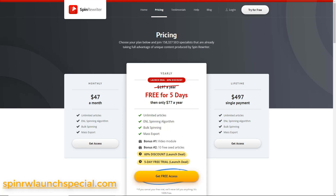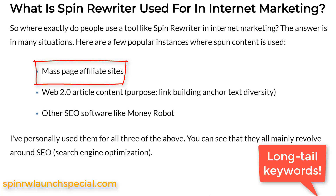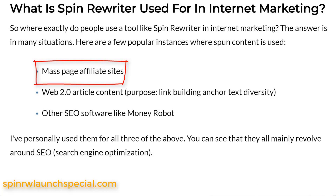Let's get started with what Spin Rewriter is most commonly used for in internet marketing. I've got three bullet points of the most commonly used uses of Spin Rewriter. First up is mass page affiliate sites. What affiliate marketers do with Spin Rewriter is they create these mass page sites — a lot of articles just spun — and they put their affiliate link in there targeting different keywords for products or services they're promoting. This is a shotgun approach to getting a lot of affiliate marketing income and clicks to your affiliate links. I actually have a bonus free course explaining how to do affiliate marketing with mass page affiliate sites.